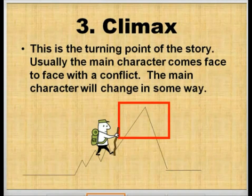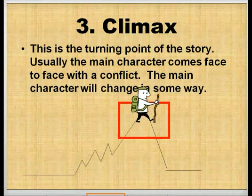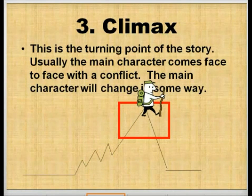The climax is the turning point of the story. Usually the main character comes face to face with some sort of conflict during the climax. The main character will change in some way when they are faced with this climax. Bob is at the top of the mountain. He can take a sigh of relief because all he has left now is to go down the hill.